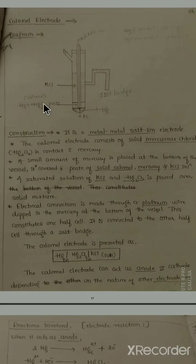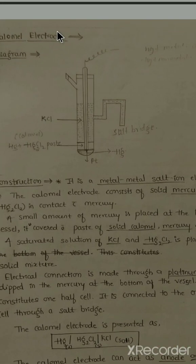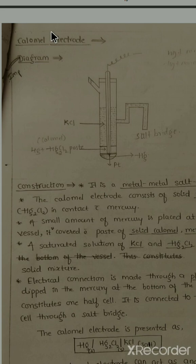Good morning everyone, welcome back. In this video we are going to study the calomel electrode. In previous videos we already studied the types of electrodes and types of reference electrodes. Now we'll study one of the reference electrodes — the calomel electrode — which is also an example of a metal-metal salt ion electrode. In the exam, you may get a five-mark question asking for the construction and working of the calomel electrode.